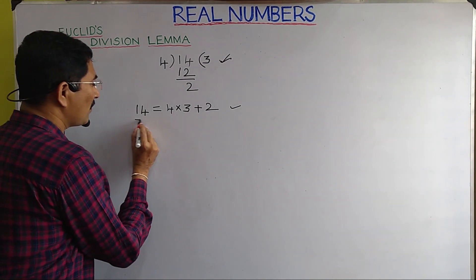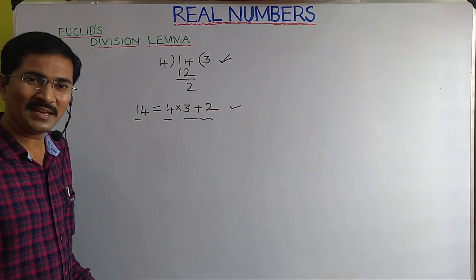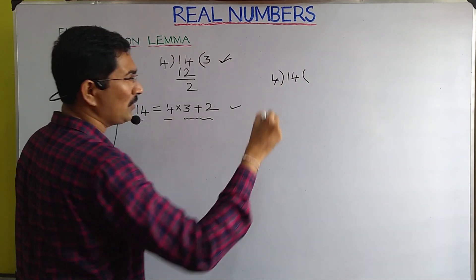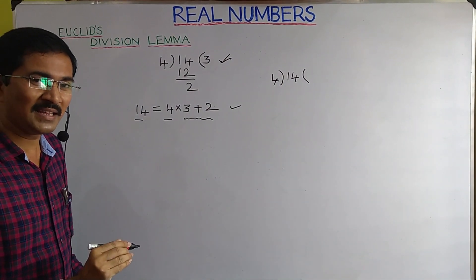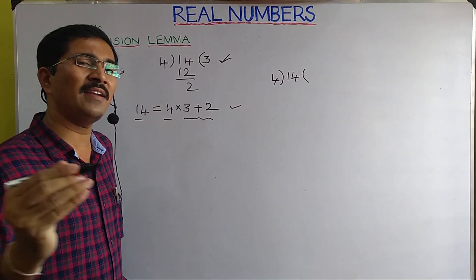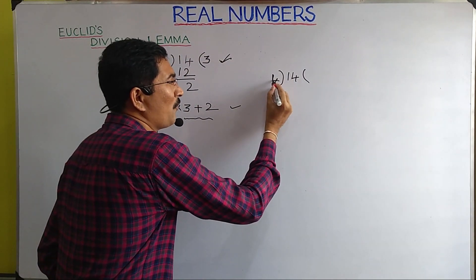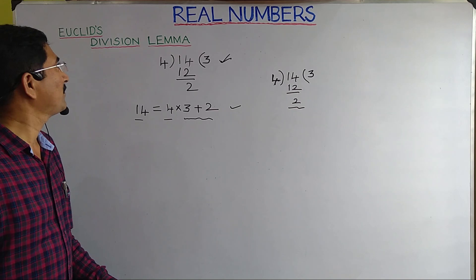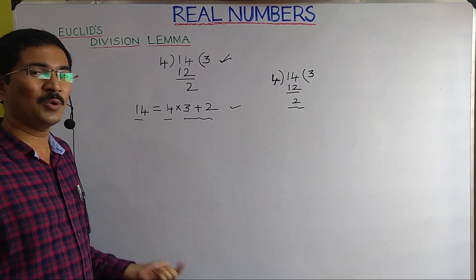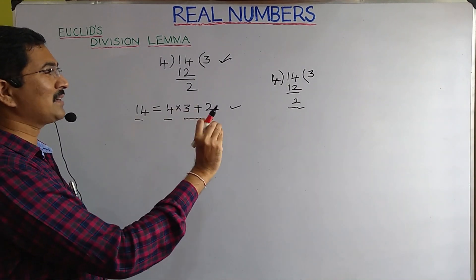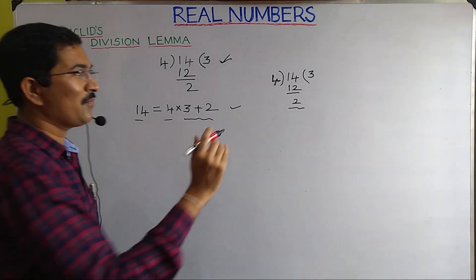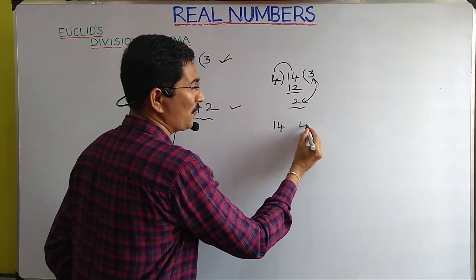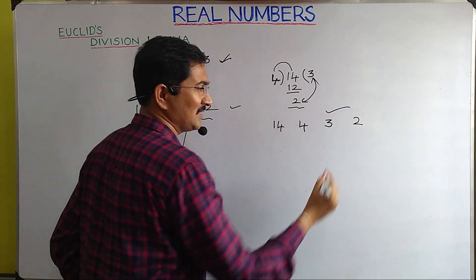This lemma says that for a fixed pair — for example, if you give 14 to anybody, anywhere, anytime, and ask them to divide it by 4 — they will only get 3 as quotient and 2 as remainder. This is the concept of Euclid's Division Lemma. For a fixed pair of positive integers, the quotient and the remainder are fixed — unique.